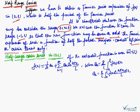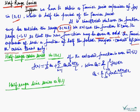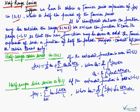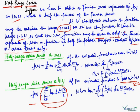Next, the half-range sine series in interval 0 to l: if the extended function is odd in the interval minus l to l, the Fourier series expansion will contain only sine terms, and it is given by the formula f(x) = summation n=1 to infinity of bₙ sin(nπx/l), where the value of bₙ = (2/l) integral from 0 to l of f(x) sin(nπx/l) dx, with integrating limits 0 to l.